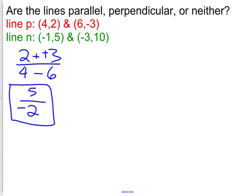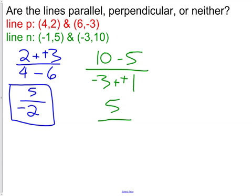Line P's slope is negative five-halves. Now we need to calculate line N. We do ten minus five over negative three minus negative one, or five over negative two. Our first line has a slope of five over negative two, and our second line has a slope of five over negative two.